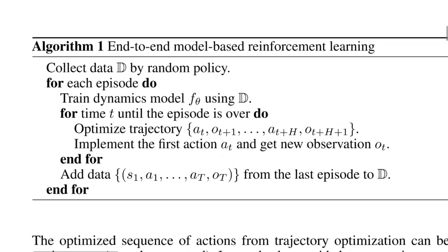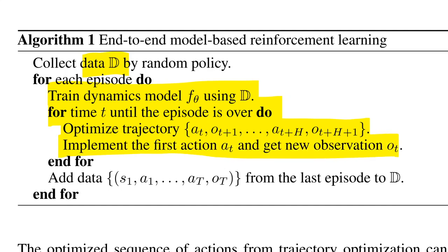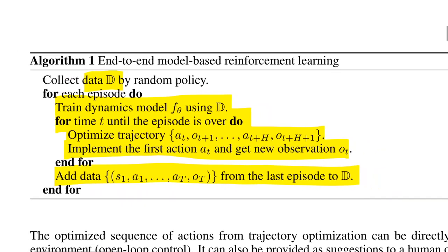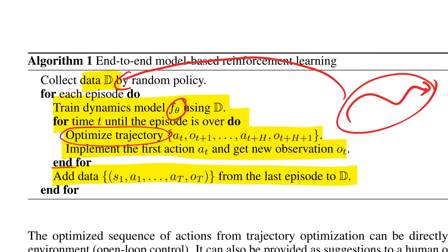Here's the algorithm: first, collect some data; then train the dynamics model using that data. For each time step T, optimize the trajectory — find the best next action sequence, take the first action, and get the new observation. Repeat until the end of the episode, then add all the new data to the dataset D. You use your world model to get the best action sequence, and at the end of each episode the collected data makes the world model better.